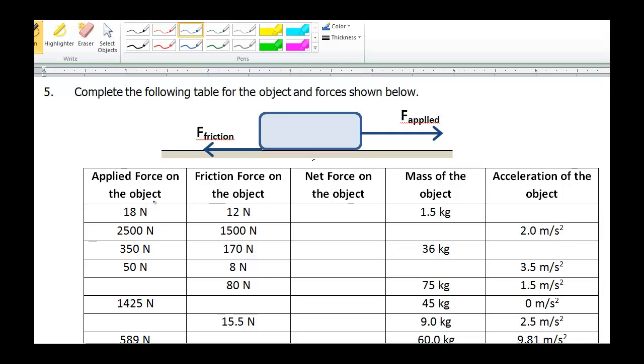We have applied force on the object and friction force on the object. The net force on the object would be the difference between the two, because applied force is to the right, friction force is to the left, to find the net force we subtract. And you also have the mass of the object and the acceleration of the object. We're going to use Newton's second law that says the net force, F net, equals mass times acceleration.